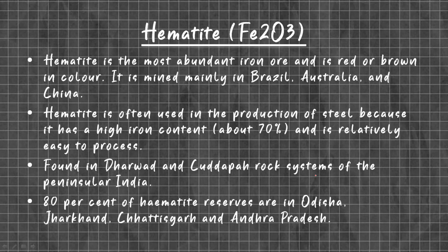Coming to hematite. The chemical formula is Fe2O3. Hematite is the most abundant iron ore and is red or brown in color. It is mined mainly in Brazil, Australia, and China. Hematite is often used in the production of steel because it has a high iron content of about 70% and is relatively easy to process.